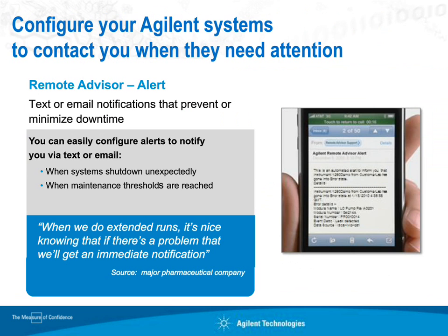Remote Advisor Alert will contact you either through email or text message when your instrument has gone down or when a maintenance threshold is about to be reached. In the case of the maintenance threshold, this allows you to plan your preventive maintenance downtime in a fashion that minimizes the impact to your overall production and productivity. In the case of your instrument unexpectedly shutting down mid-run, you can immediately go and address the situation and get it up and going as quickly as possible. You minimize downtime and also minimize waste — your pump won't continue pumping solvent and your lamp won't continue burning with no analysis being generated, so overall costs drop considerably.